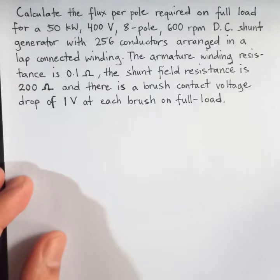Hello, let's solve this problem about DC generators. Calculate the flux per pole required on full load for a 50 kW, 400 V, 8-pole, 600 RPM DC shunt generator with 256 conductors arranged in a lap-connected winding. The armature winding resistance is 0.1 ohm, the shunt field resistance is 200 ohms, and there is a brush contact voltage drop of 1 volt at each brush on full load.